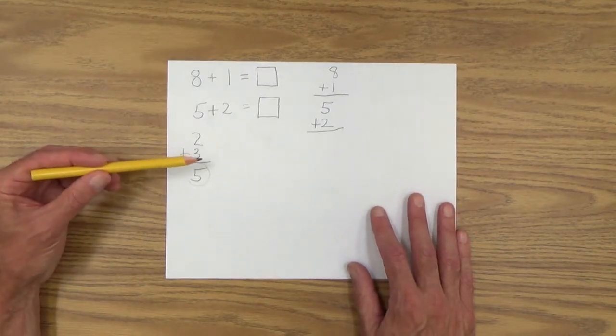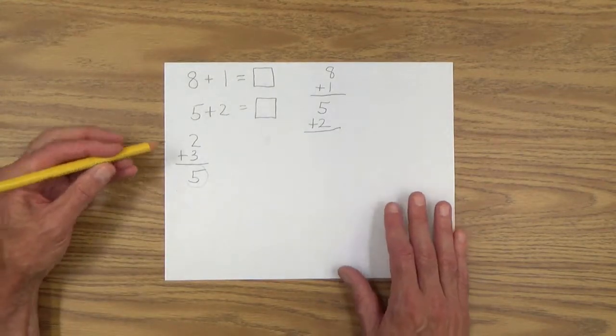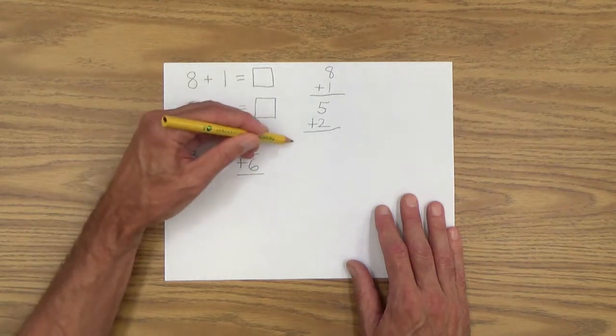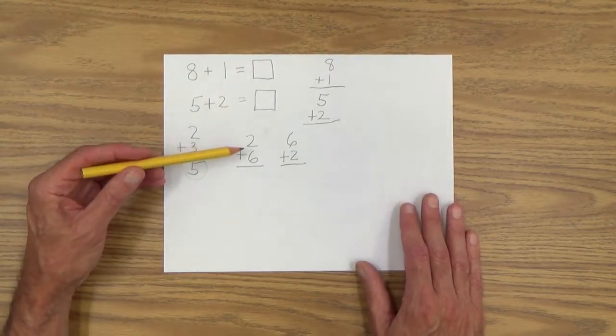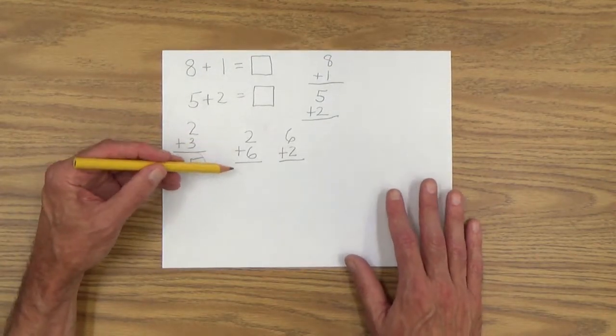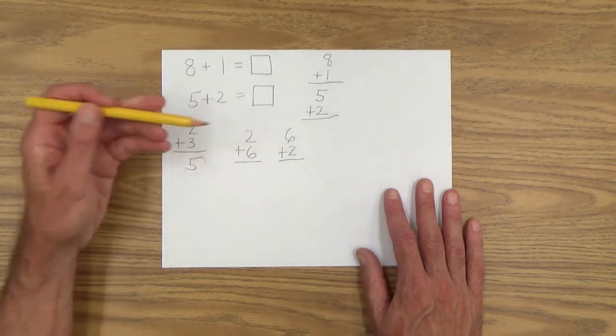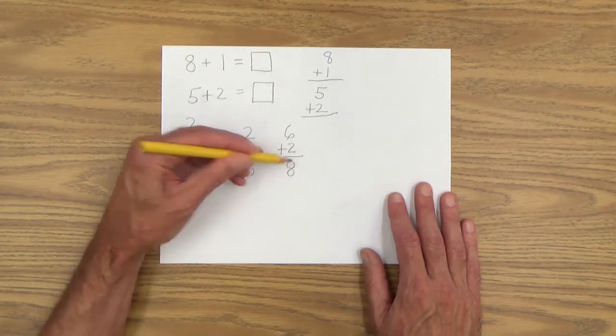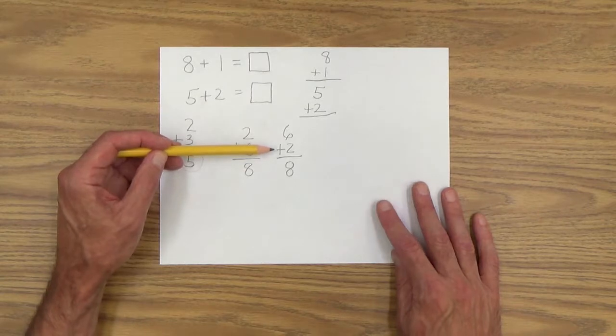All right. And at this point, you may want to remind them of the commutative property. So in other words, you can tell your child that these two column addition, whatever you want to call it, these two equations, addition equations, have the same answer. The order makes no difference. Two plus six and six plus two will give you the same answer. And that of course is eight. And if he understood the commutative property in line addition, he will probably have no trouble understanding it in this new form of column addition.